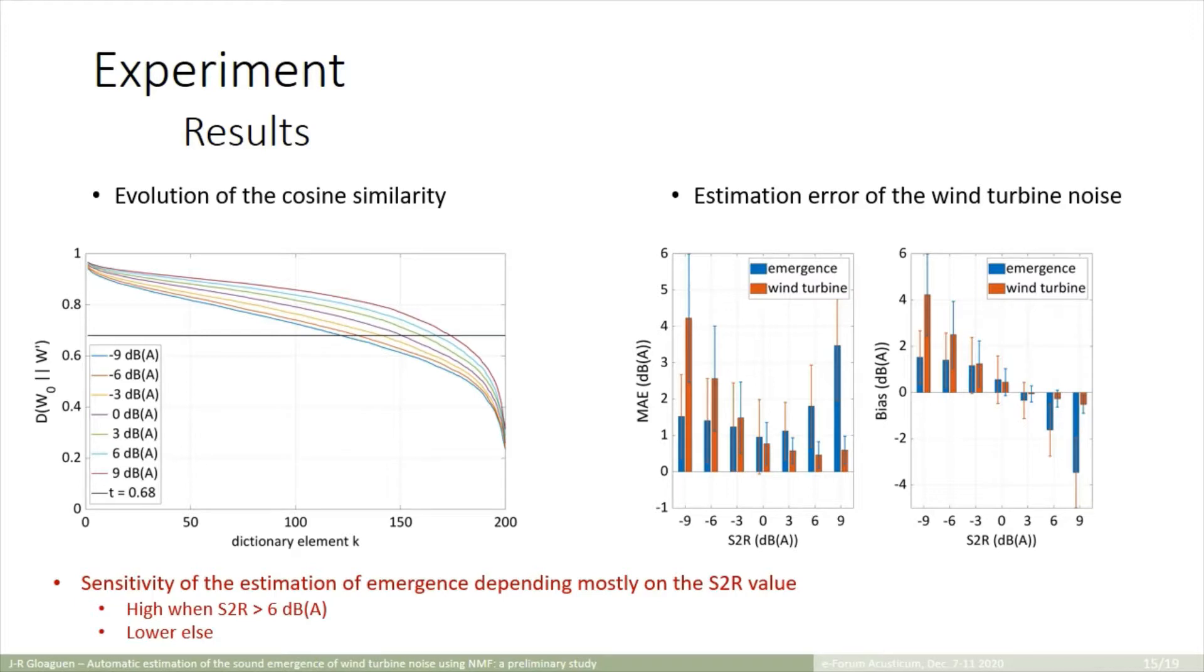But, in opposite, when S2R is negative, the fixed threshold is in the end too low, and consider too many elements as wind turbine, which provokes here an overestimation. But, this behavior is finally compensated as the wind turbine noise is not predominant in these scenes. The error on the emergence is then low, which explains why we perform well on these cases.